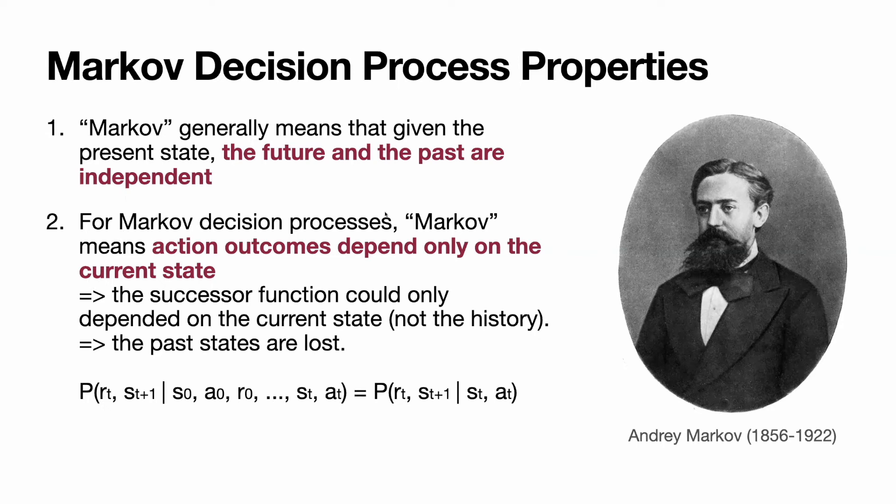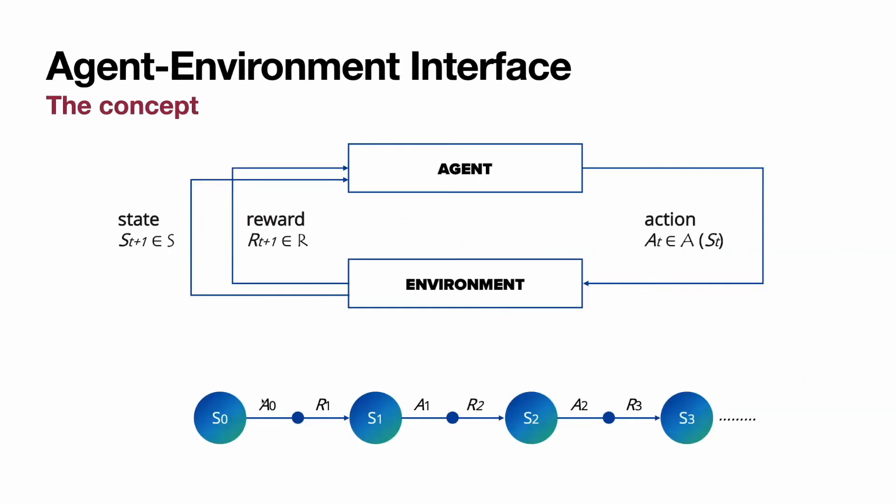For Markov decision process, Markov means the action outcomes depend only on the current state. It means if we are in the S0, the reward R1 is calculated based only on S0 state and future rewards. We don't care about what's in the past.